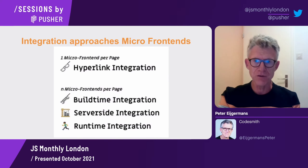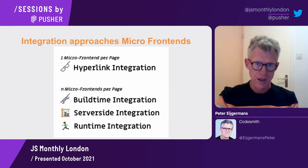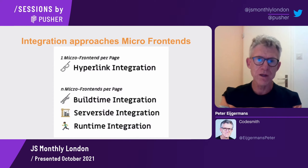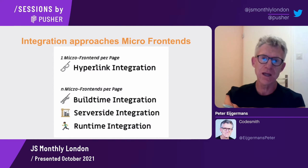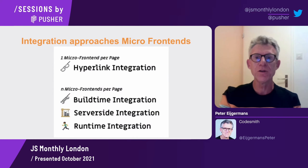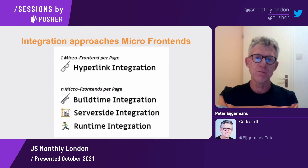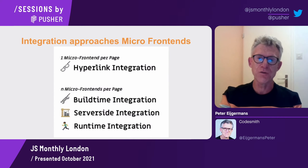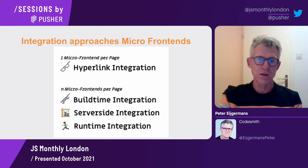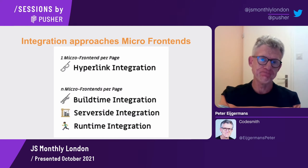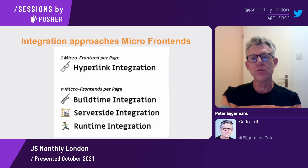You have less coordination between teams — for example, between team profile and team catalog. And every team can decide which language it will use: profile can use Angular, catalog Vue, and ordering React. That is also possible with micro frontends.